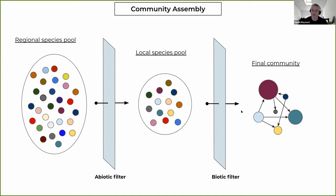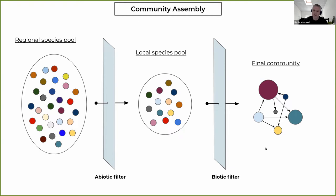I'm going to talk about the biotic filter primarily through the lens of competition, in part because we're thinking of forests. They're very long-lived and a really nice study system for looking at competition. It's not to say they don't have tons of other processes like herbivory and parasitism, but on first approximation, competition is a really dominant structuring force in communities.